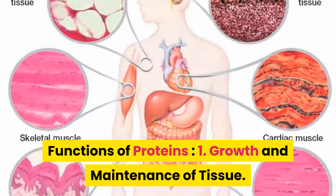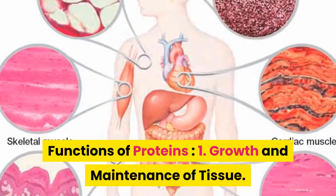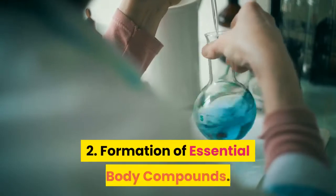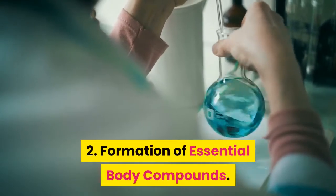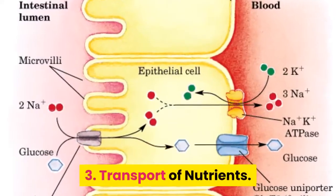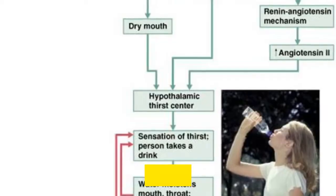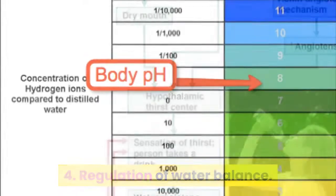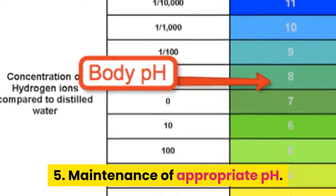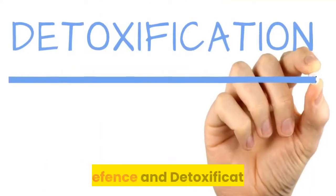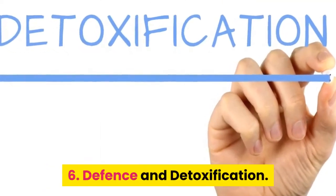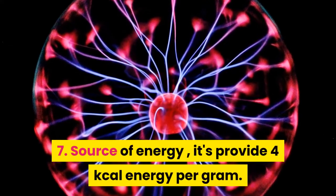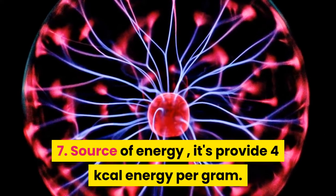Functions of proteins: 1. Growth and maintenance of tissue. 2. Formation of essential body compounds. 3. Transport of nutrients. 4. Regulation of water balance. 5. Maintenance of appropriate pH. 6. Defense and detoxification. 7. Source of energy — protein provides 4 kilocalories of energy per gram.